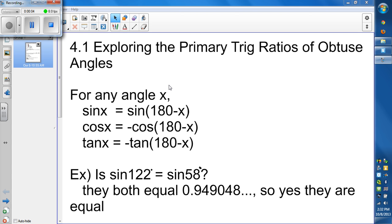Chapter 4 deals with the sine and cosine laws for obtuse angles. So 4.1, exploring the primary trig ratios of obtuse angles.